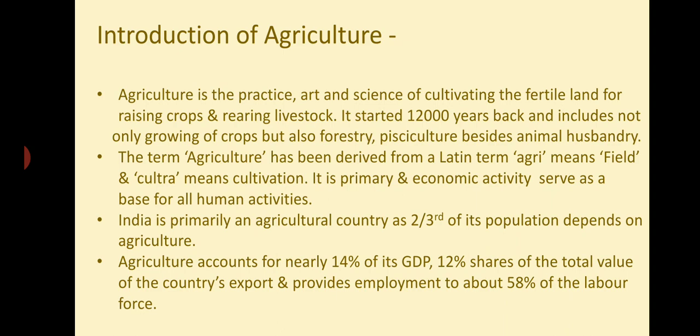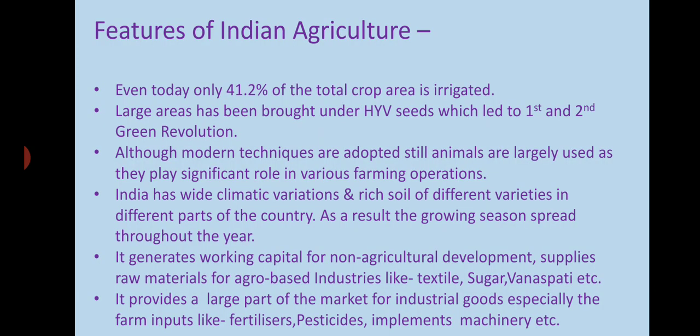Agriculture is the primary economic activity which serves as a base for human activities from time unknown. As far as India is concerned, it is an agricultural country and about two-thirds of its population is directly dependent on agriculture. Overall, agriculture accounts for nearly 14% of its GDP, 12% share of the total value of the country's exports, and provides employment to about 58% of the labor force.